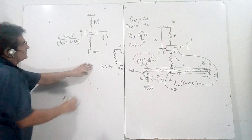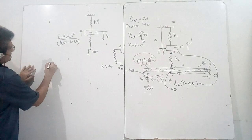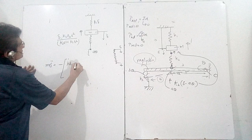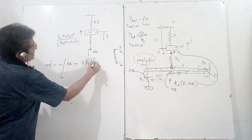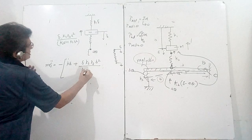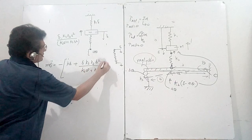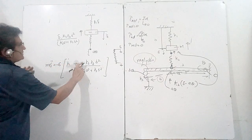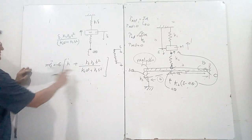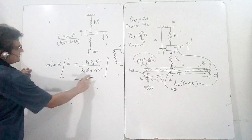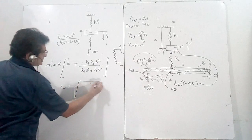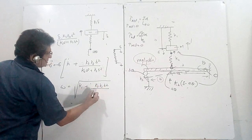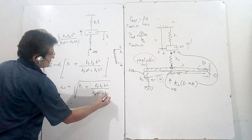The equation of motion is m·delta_double_dot = −[k1 + k2·k3·b²/(k2·a² + k3·b²)]·delta. This is the standard SHM equation, so omega = sqrt(k_effective/m), where k_effective equals k1 plus k2·k3·b² upon (k2·a² + k3·b²), all divided by m.